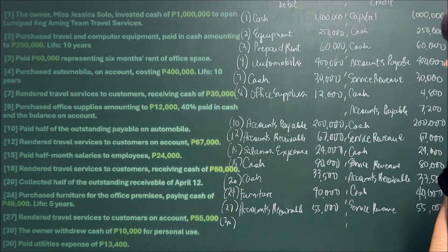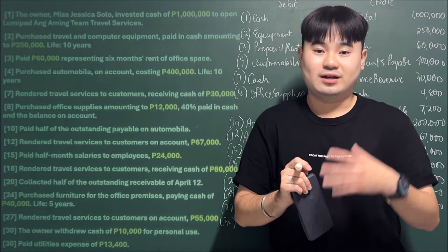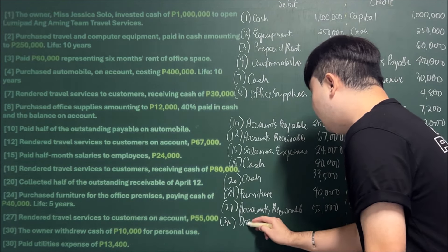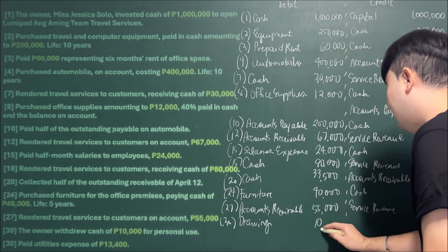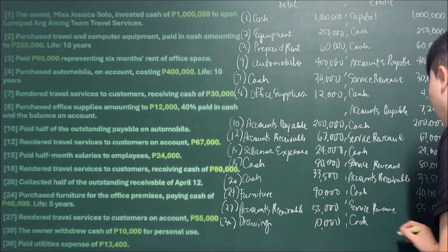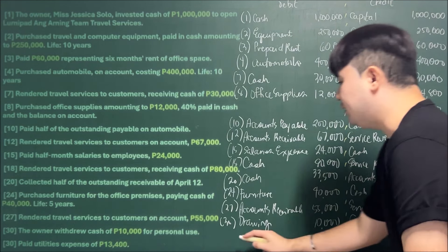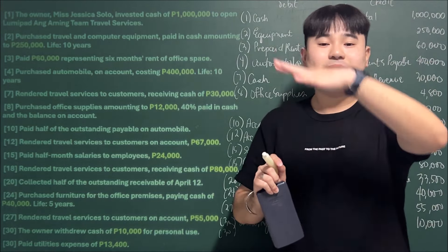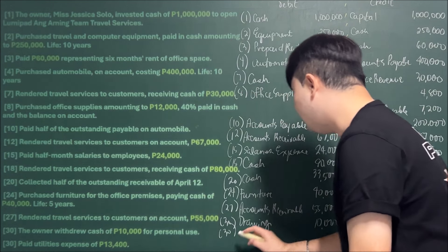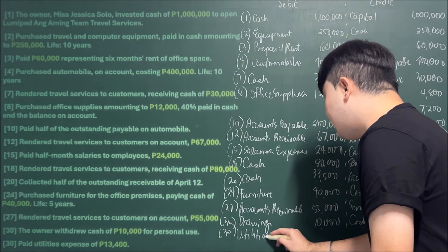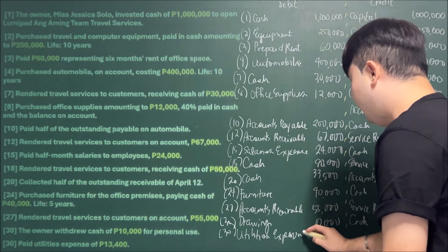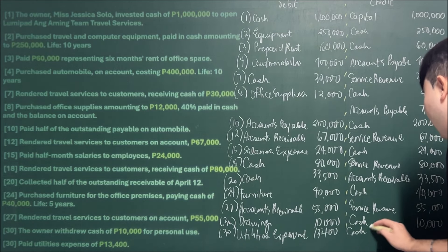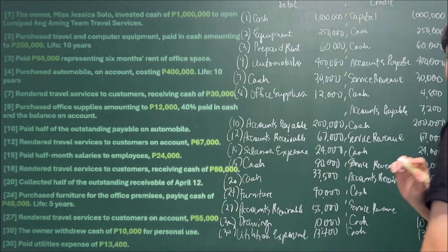April 30: The owner withdrew cash of 10,000 for personal use. We use the Drawing account. We debit Drawing for 10,000 and credit Cash for 10,000. Also on April 30: Paid utilities expense of 13,400. We debit Utilities Expense for 13,400 and credit Cash for 13,400.